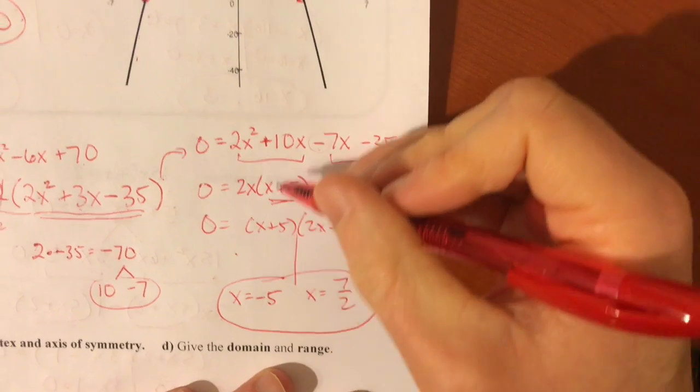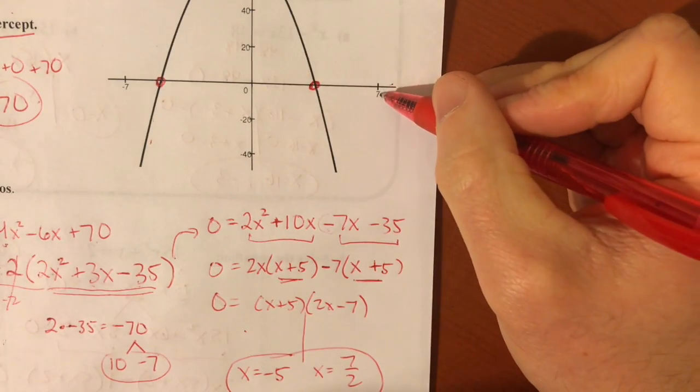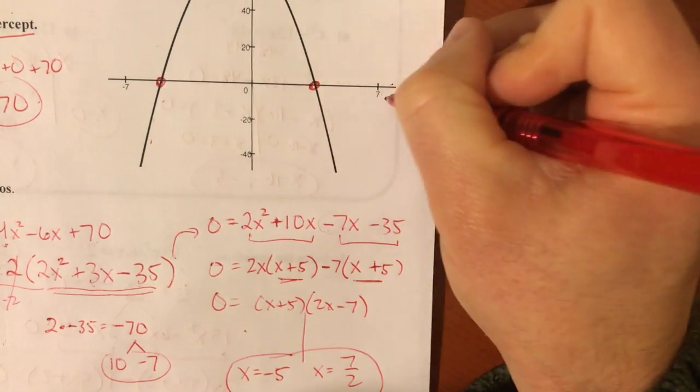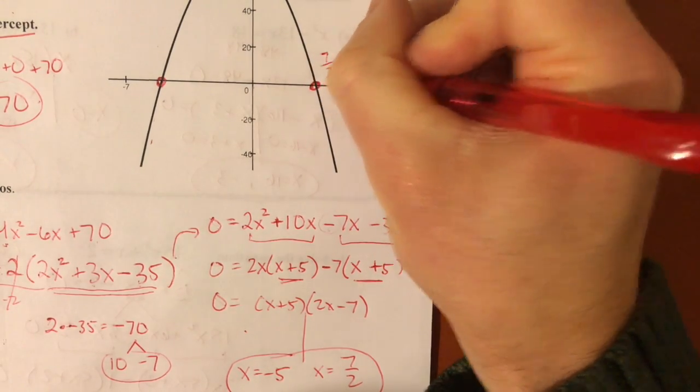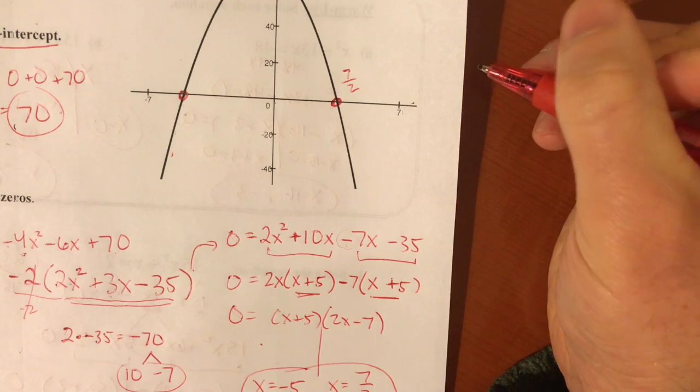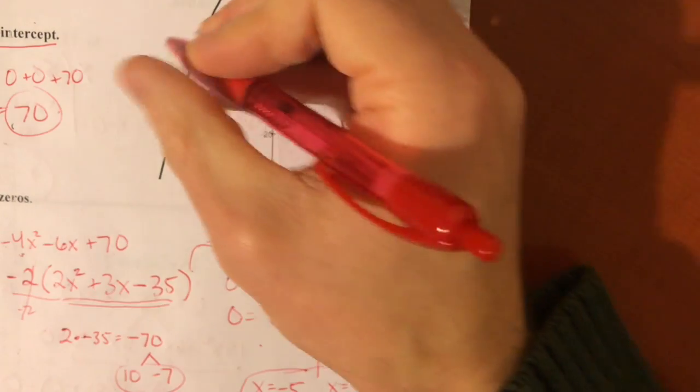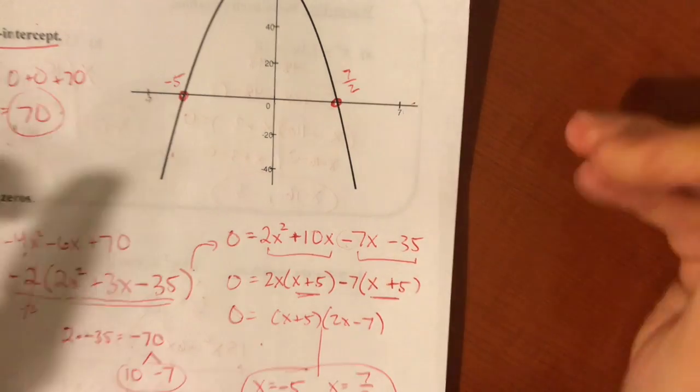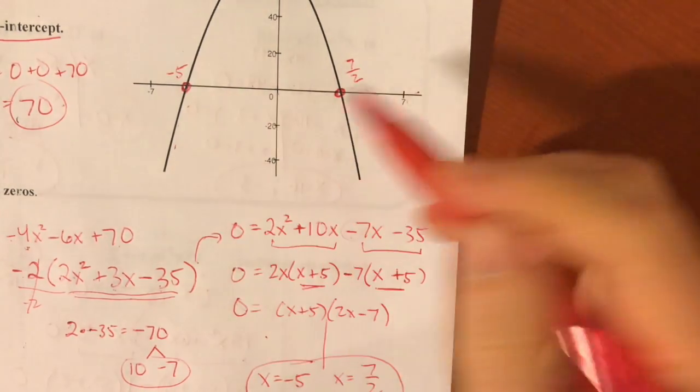And you can see, if you like, that on the graph, I gave you the scale here. This is 7. This is smack dab halfway between 0 and 7. That's the 7 halves, or 3.5. This one is a little bit closer to negative 7, you can see. That's the negative 5. So we kind of had a sense that you should be getting one positive and one negative.